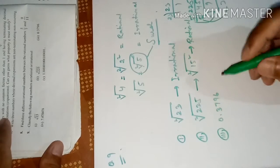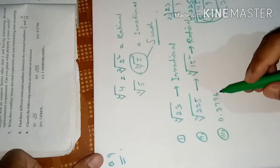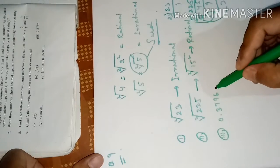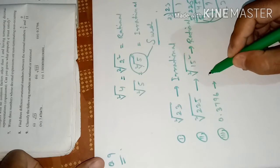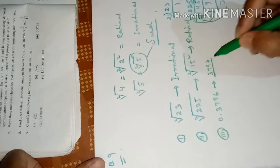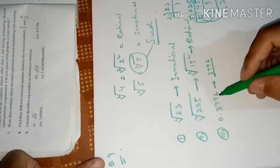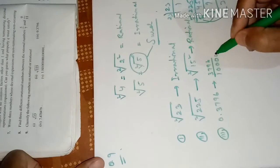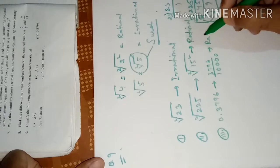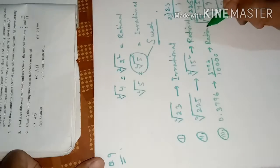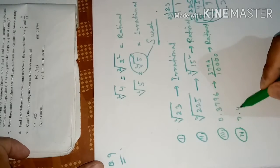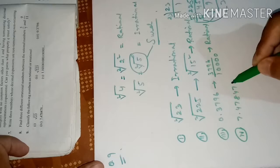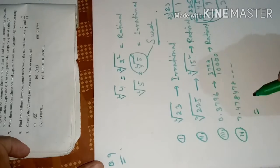Third number: 0.3796. There is no recurring dot — the number stops here itself. This can be written as 3796/10000 (since there are 4 digits after the decimal point). So this is a rational number.